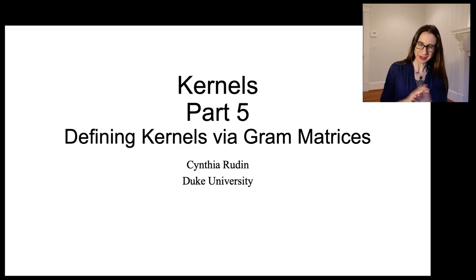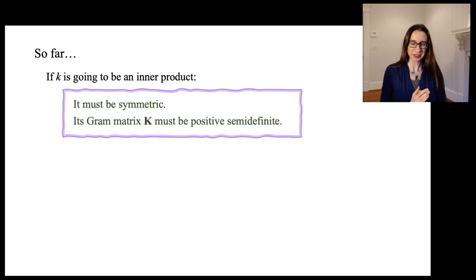We're building up to our definition of what a kernel is, and we're going to leverage some information that we learned from working in a world that is finite. So if our function k is going to be an inner product, first of all it has to be symmetric, no question about that, and then also its Gram matrix must be positive semi-definite, which means its eigenvalues are all non-negative.